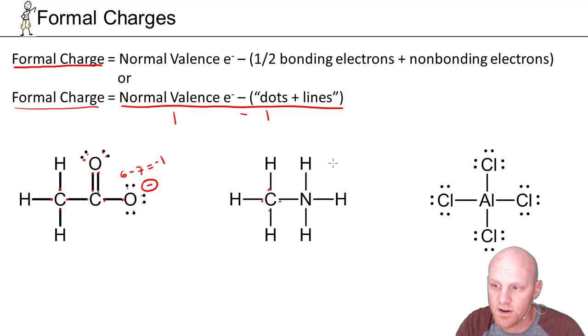And finally for nitrogen here, five is his normal valence, and he's got one, two, three, four lines and no dots. So five minus four, and he's got a plus one formal charge.